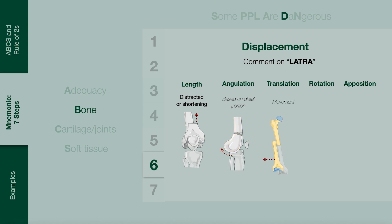Translation. Determine if the fracture has moved on the horizontal plane, medially or laterally. This is an example of lateral translation. Rotation. Comment if there is any rotation as shown here. Apposition. Ask yourself: do the ends meet? Comment using terms such as good apposition, partial apposition, poor apposition or no apposition.